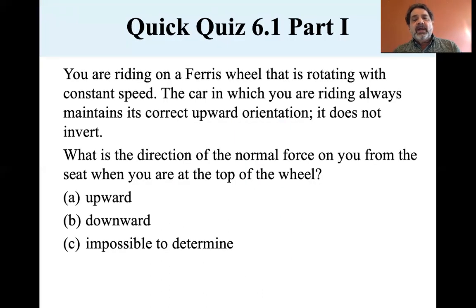Now you're riding on a Ferris wheel that is rotating with constant speed. The car in which you are riding always maintains its correct upright orientation; it does not invert. What is the direction of the normal force on you from the seat when you are at the top of the wheel?